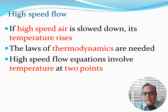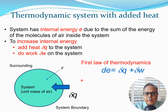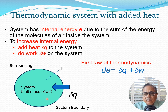Everything we discuss in today's lecture is applicable only to high-speed flow. Let us take a brief review of thermodynamics — a slightly different perspective on the first law. We look at a system with unit mass of air, with a system boundary. The surrounding is everything outside; the system is everything inside. Using unit mass is convenient — for example, it lets us define the relationship between density and volume very simply.